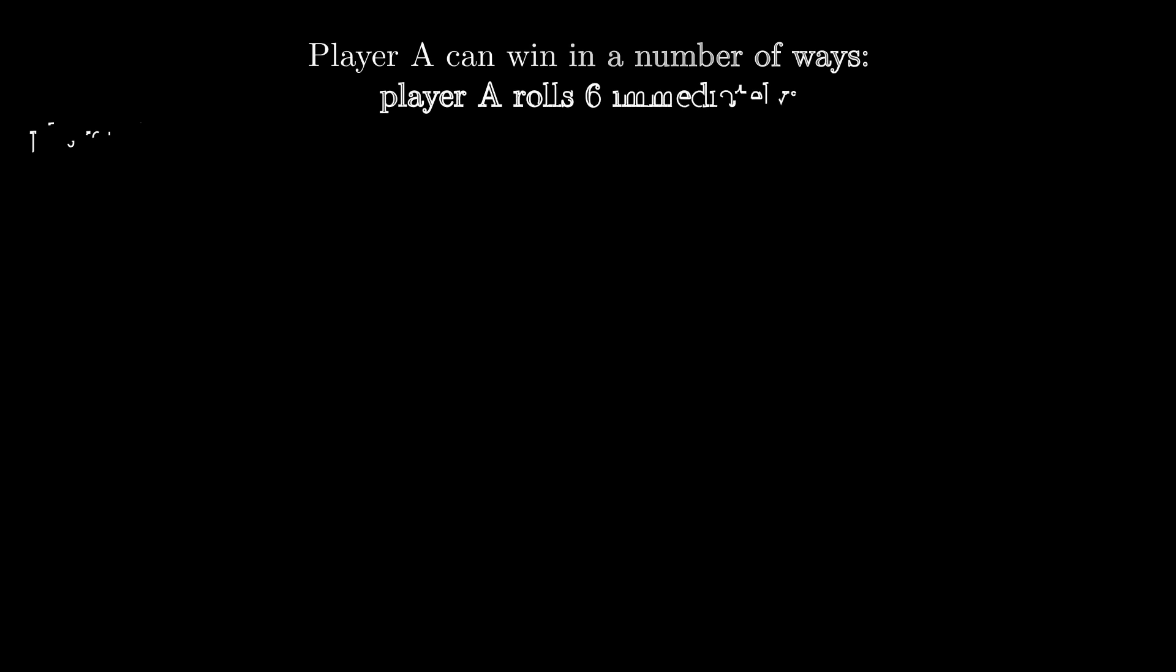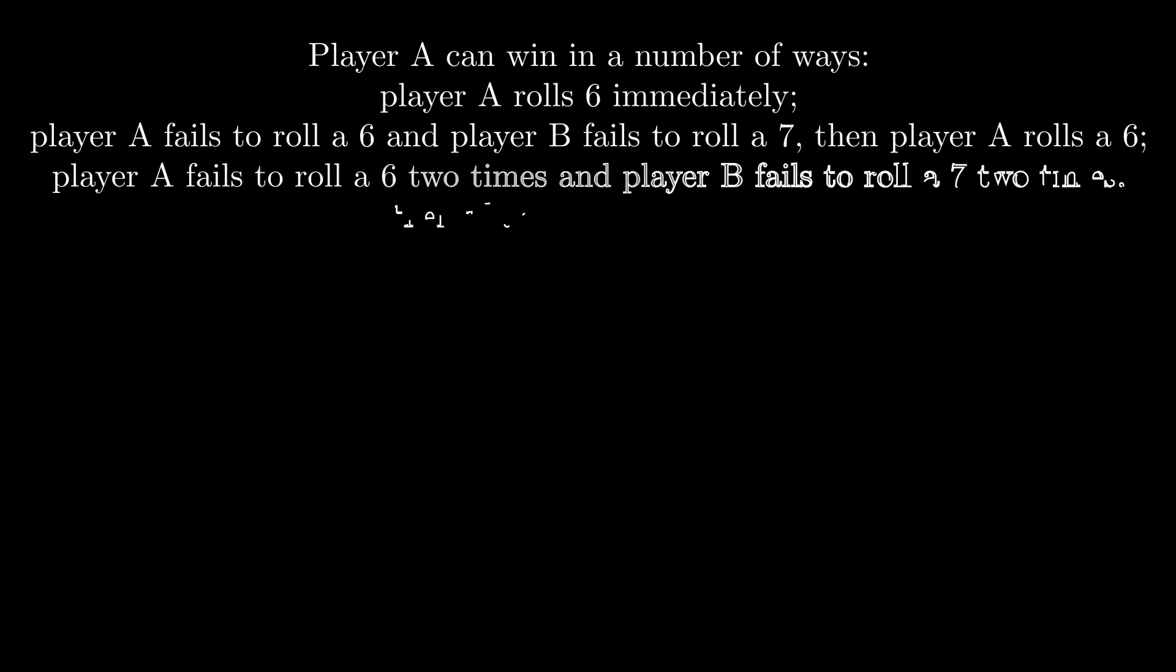Player A can win in a number of ways. Firstly, player A can roll a 6 immediately. Or, both players A and B can fail the same number of times and then player A rolls a 6.